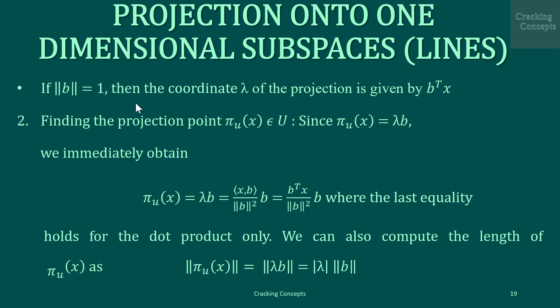If the norm value of b is 1 then the coordinate lambda is given by b-transpose x. Next we find the projection point pi_U(x). Since pi_U(x) is given by lambda*b, we can immediately obtain pi_U(x) equals lambda*b, substituting lambda as the inner product of x and b divided by the norm squared of b, multiplied by b. The last equality holds for a dot product only.